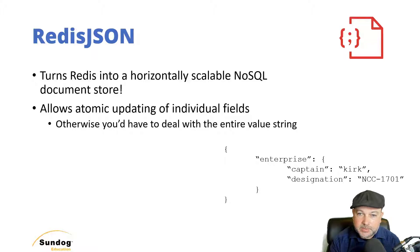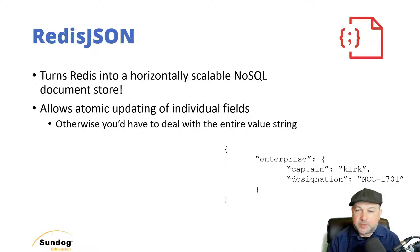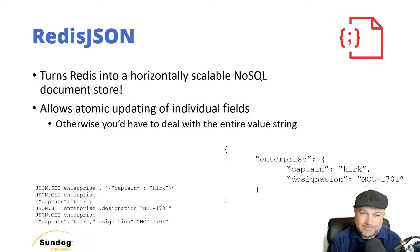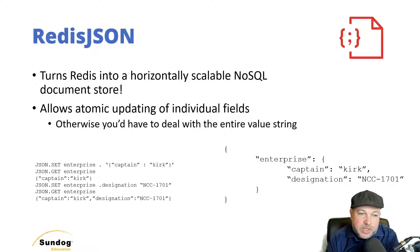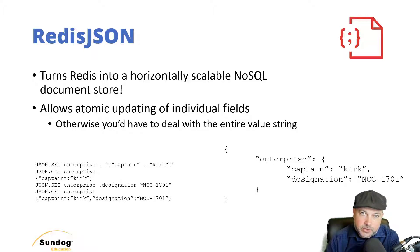Let's look at some examples. Here's a simple example JSON data structure. Let's say I'm keeping a little database of Star Trek ships, and we want to track the captains and designations of those ships. So for the ship Enterprise, the captain is Kirk, and its designation is NCC-1701. We can say JSON.set — these are actual Redis CLI commands — to set up our initial data with Captain Kirk under the structure Enterprise. Already we have this nested data structure with one line of code.